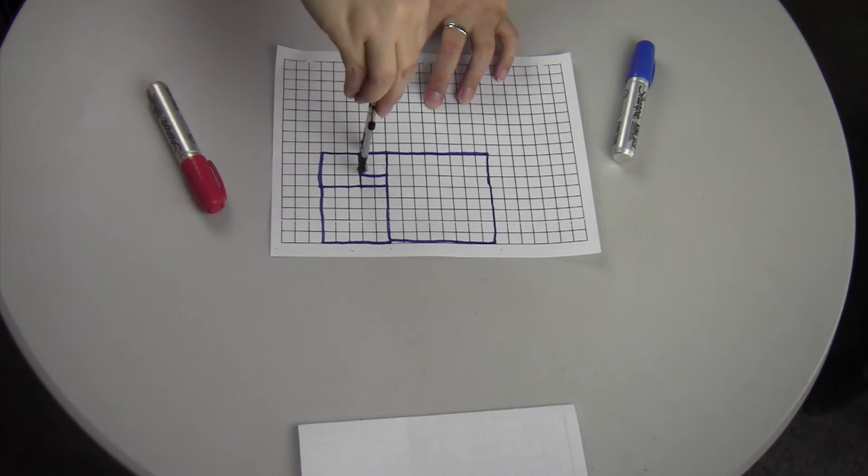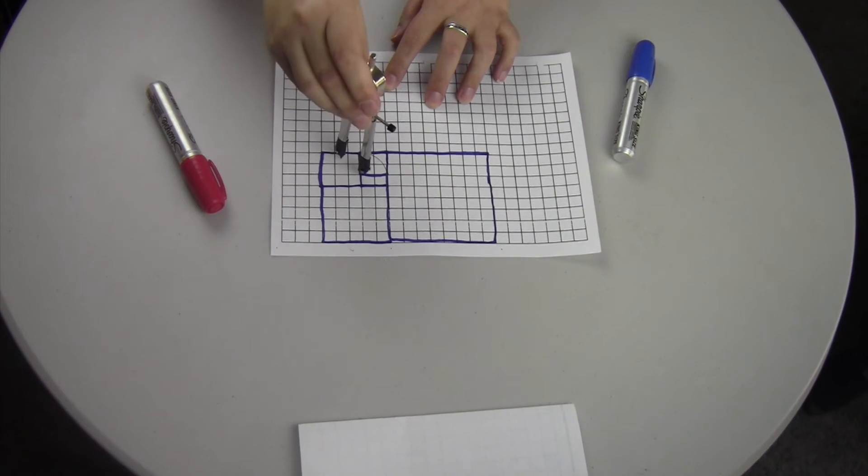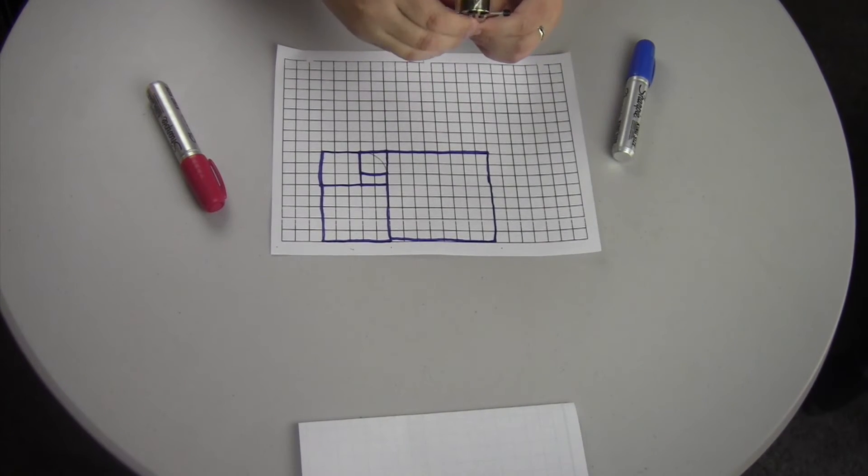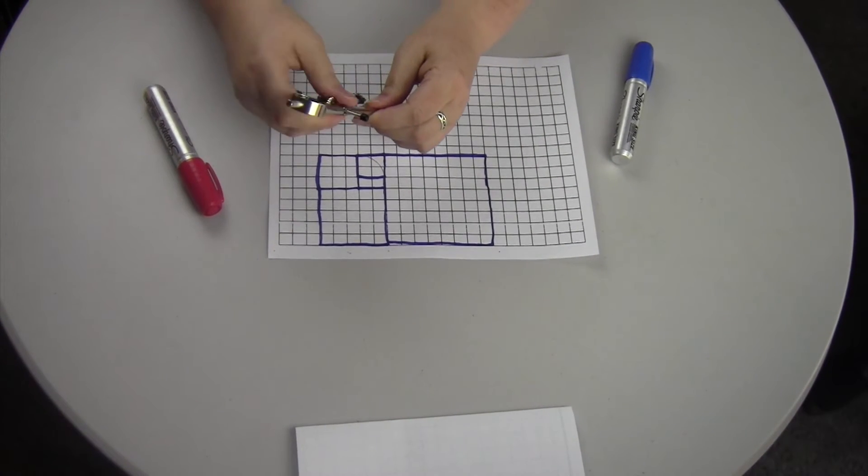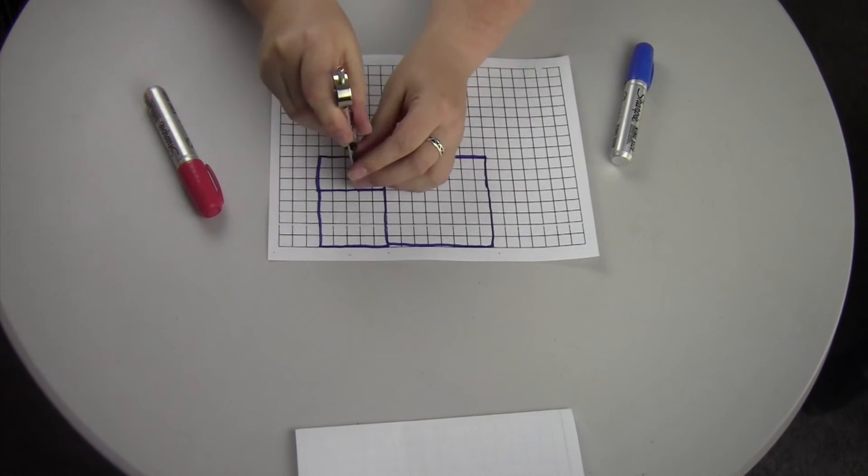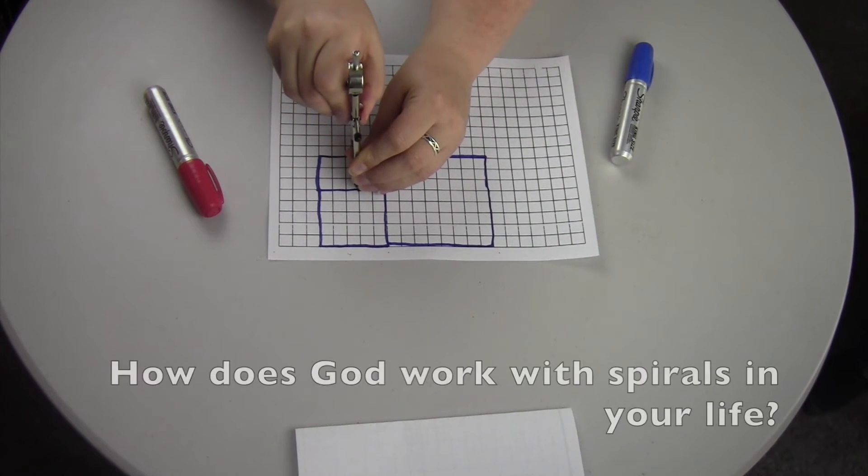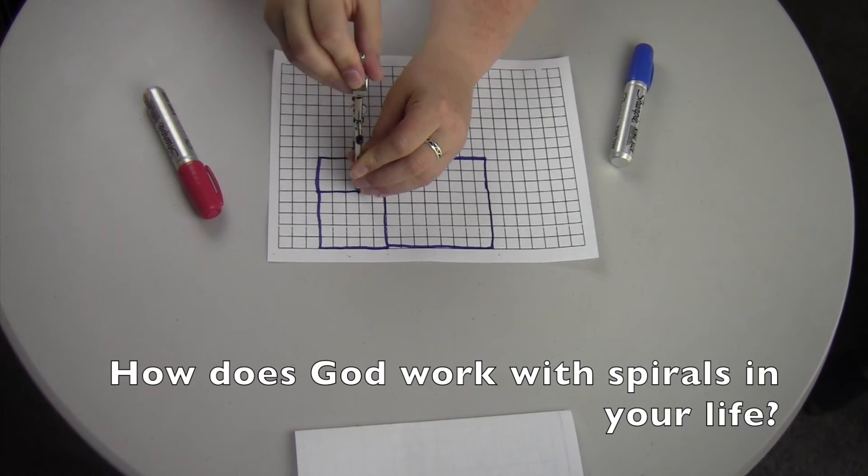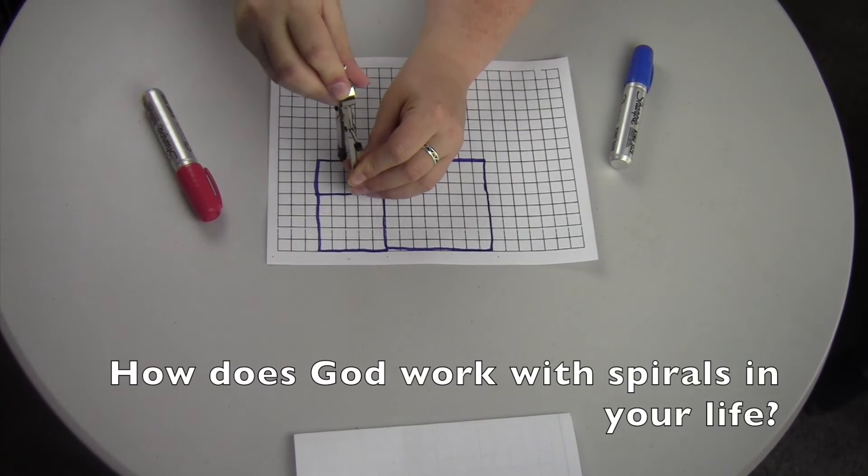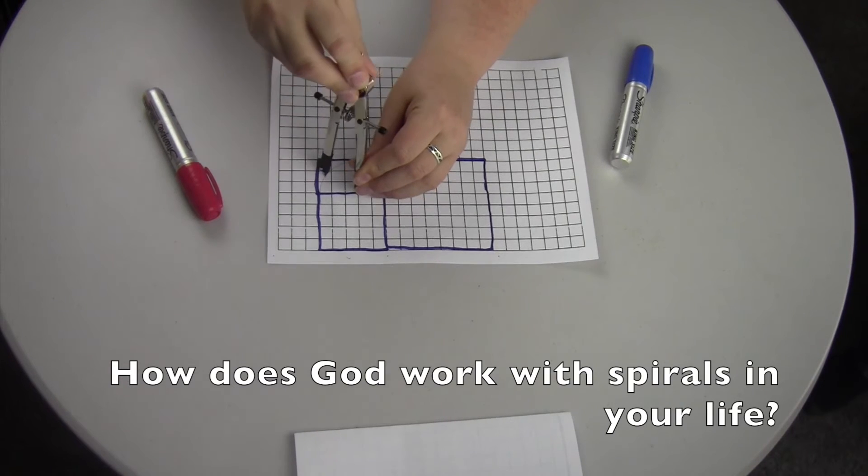Whoa, hold it still. And then you can open it to the next bigger square. Just the length of it, and then you're going to go from diagonal corner to a diagonal corner. Like this.